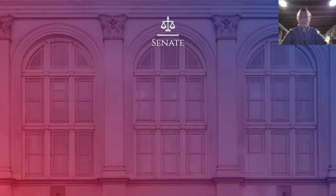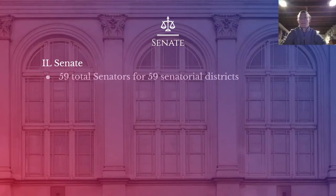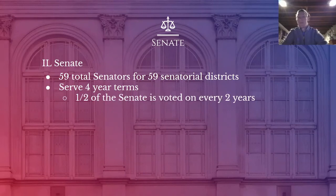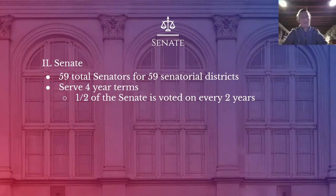Moving along now to the Senate: in the Illinois Senate, there are 59 total senators for the 59 senatorial districts, and they will serve four-year terms. This is different from the six-year terms that U.S. senators serve. Half of the Senate is going to be voted on every two years — tell me in the comments below why that makes sense and what purpose that fulfills.